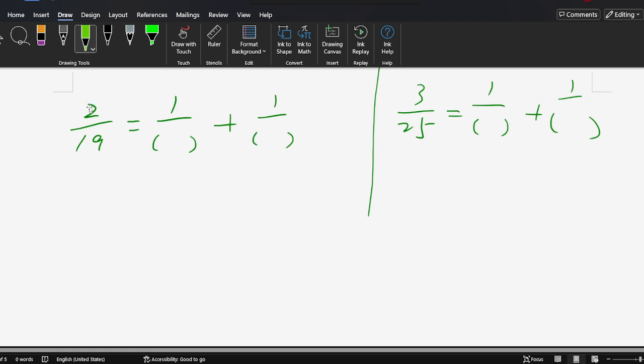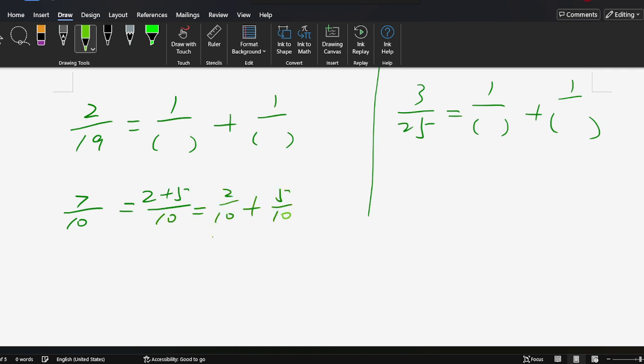Now we have the question: 2/9. We need to fill in natural numbers in the brackets, but they should be different. For example, 7/10 equals (2+5)/10, which equals 2/10 + 5/10, which equals 1/5 + 1/2.